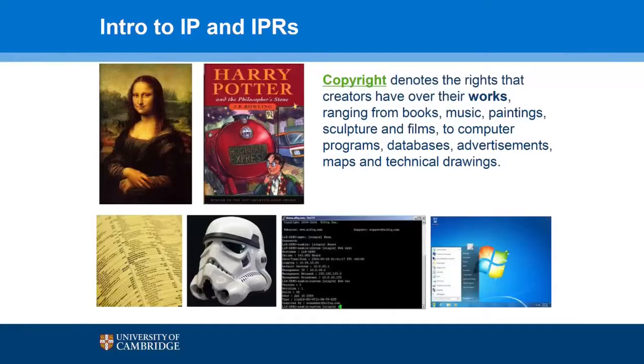It is not a monopoly in the sense that once I have a patent I can freely commercialize my product, but it does mean that as the right holder I can prevent others from using my intellectual property rights — from using my copyright-protected work or my patent-protected invention. Copyright, as one probably imagines, protects works of art, literature, books, music, films, and sculptures, but it also includes more modern aspects such as computer programs and databases.